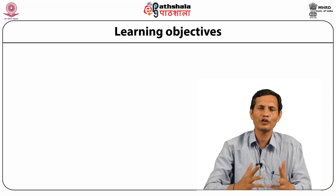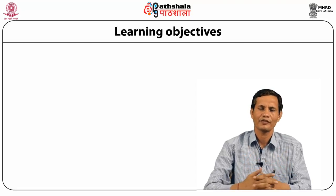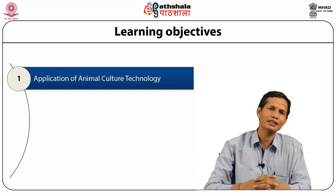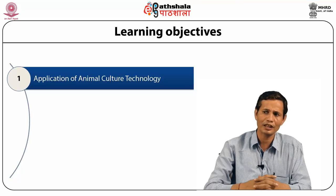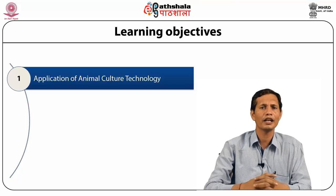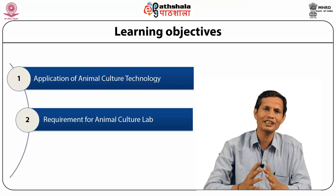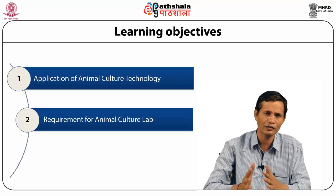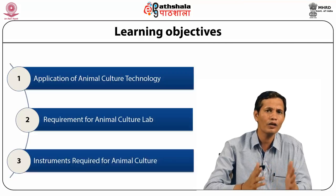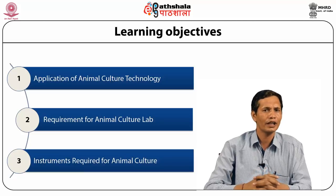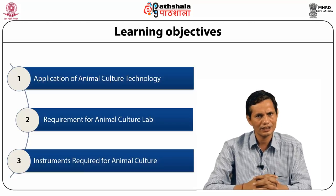Under this module we are going to learn three objectives. First, what are the various applications of animal cell culture technology; second, which type of basic laboratory facility is required; and third, how various instruments are helpful for animal cell culture technology.